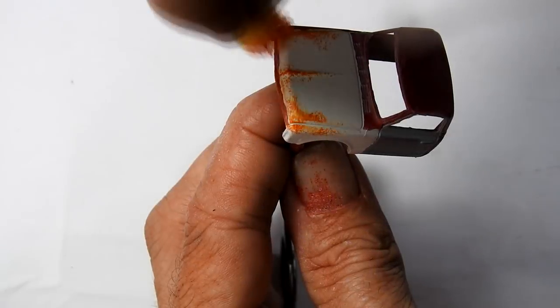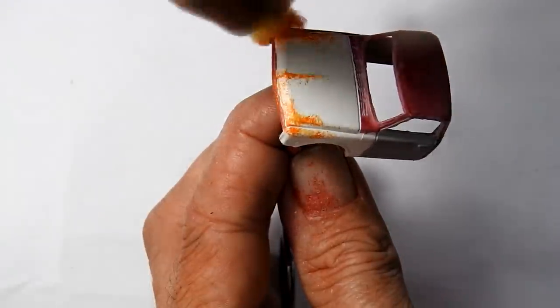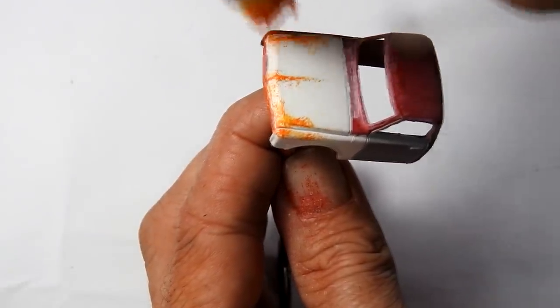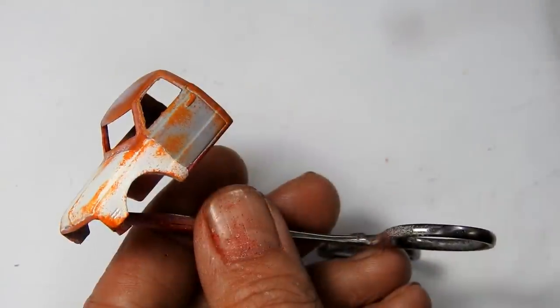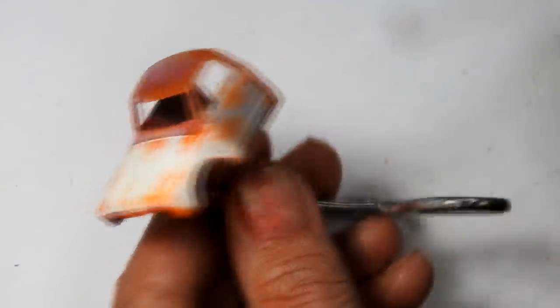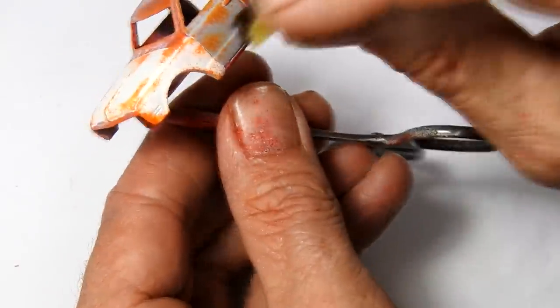Next I add some rust so I'm just using a sponge here. I started out with an orange rust and then I followed it up with a darker brown.